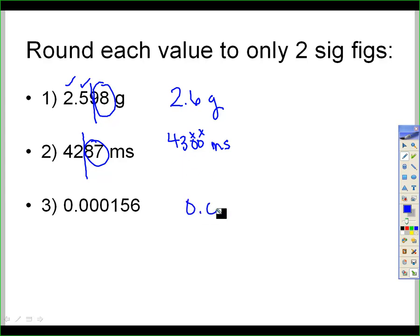Number three, your answer should be 0.00016. Since none of these zeros are significant, we start counting here with the one. Remember, they're at the beginning of the number, so they don't count. And then 5, because the next digit is a 6, this number is actually closer to 0.00016. And I didn't put a unit on that. Let's call it liters.